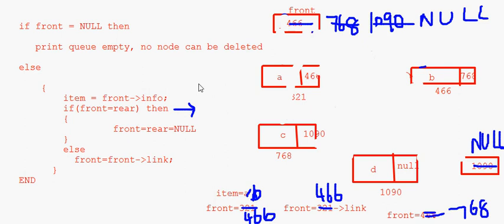So this is how deletion is done in a linked queue. We have seen the concept of deletion from a linked queue. In our next session we will write the code for this. With that, I end this session — bye.